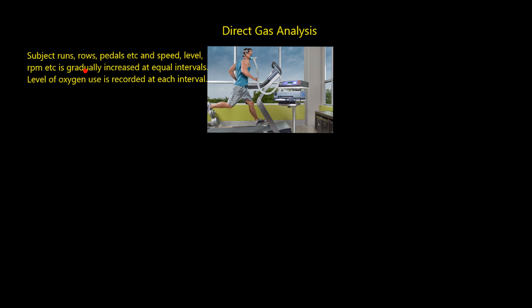With direct gas analysis, what's happening is this guy is running — but he could equally be rowing or pedalling on a bike. The speed, level, or revs per minute is gradually increased at equal intervals. So you might be running on a treadmill and every two minutes the speed is increased by two kilometres per hour. At each of those intervals, the level of oxygen the person is using is recorded via a mask where they're breathing in and out and the computer records it. At some point they'll reach a speed where they can't go anymore, and the level of oxygen used when that subject is forced to stop is their VO2max value.